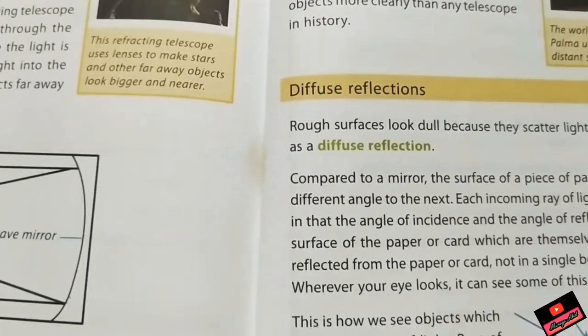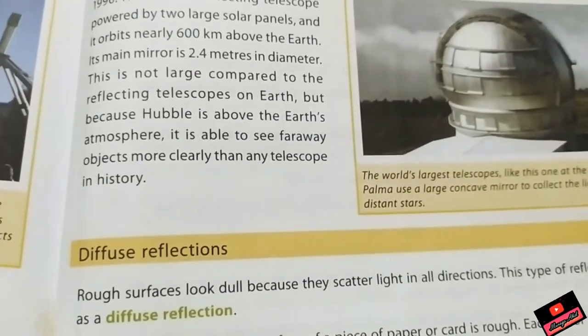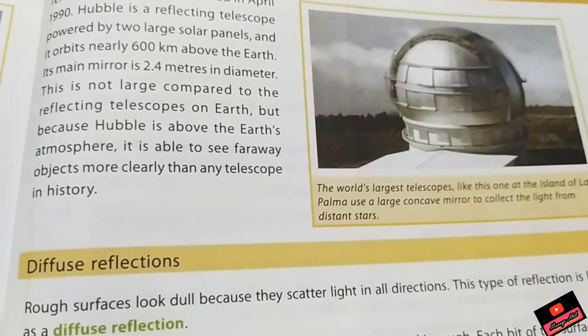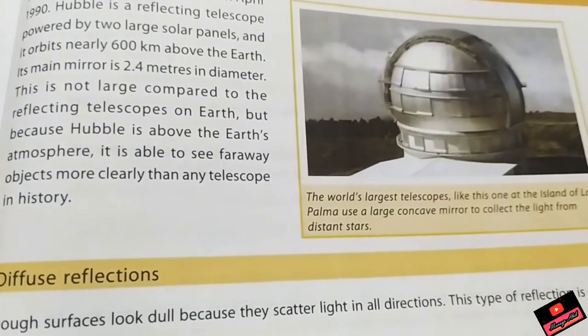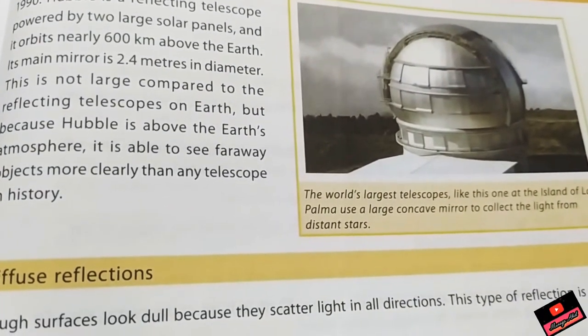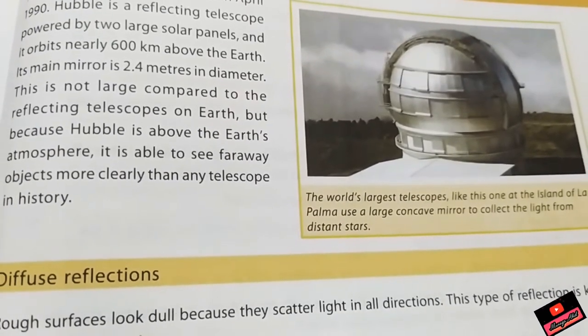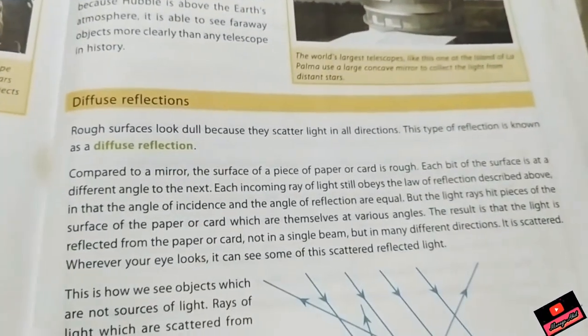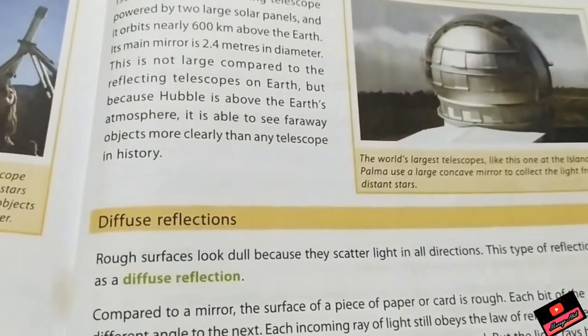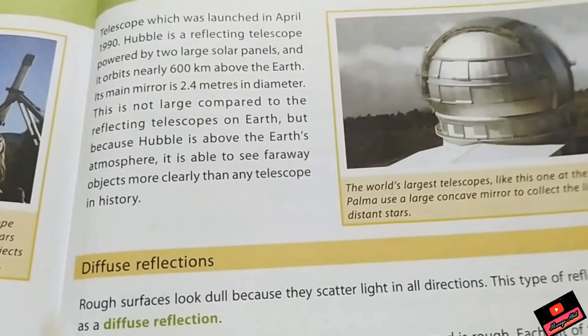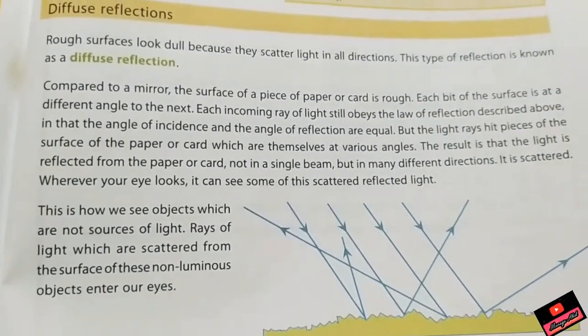Here is the world's largest telescope shown on page number 123, and it's on the island of La Palma. A large concave mirror to collect the light from the distant stars. Whatever images we are getting of the galaxy and other things are from these types of telescopes.